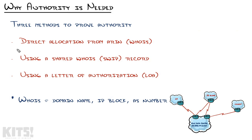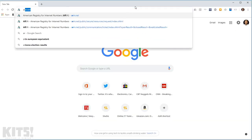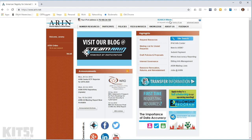The first way is through a direct allocation from ARIN, which can be verified via the Whois record. Most people think of Whois records as they relate to domain names — like who owns CBTNuggets.com — but Whois is more than just domain names. It can also show you information for IP blocks and autonomous system numbers. I'm going to head over to ARIN.net and use the Whois database search. I'll type in the network we're using: 63.232.144.0/24.